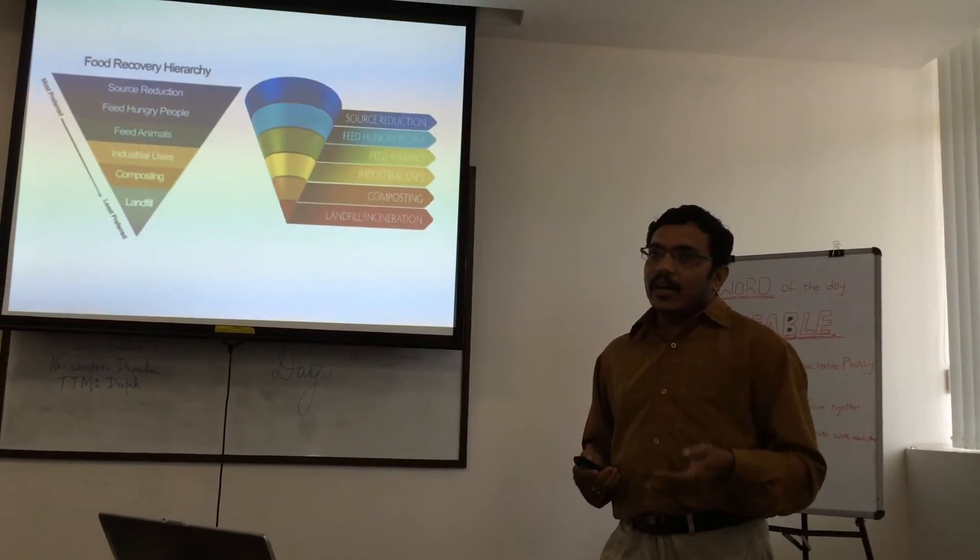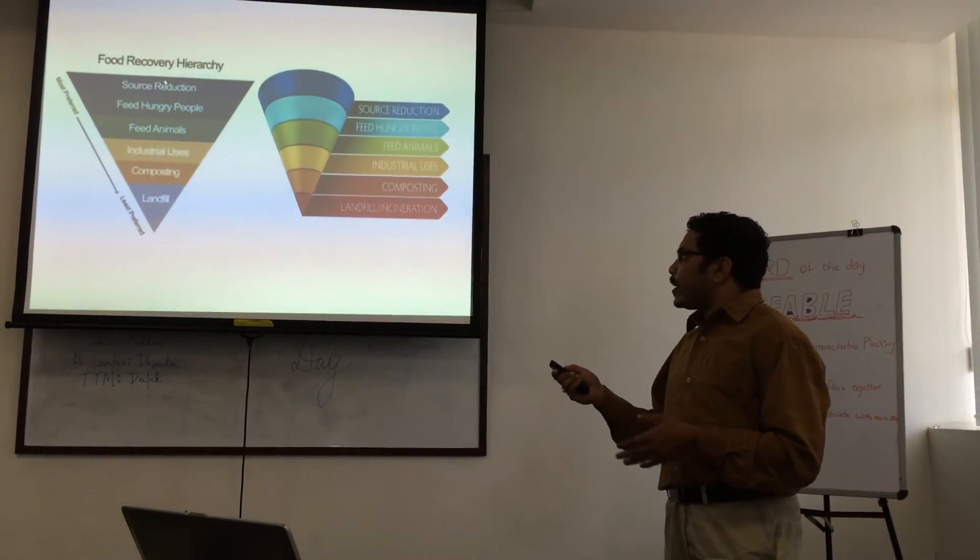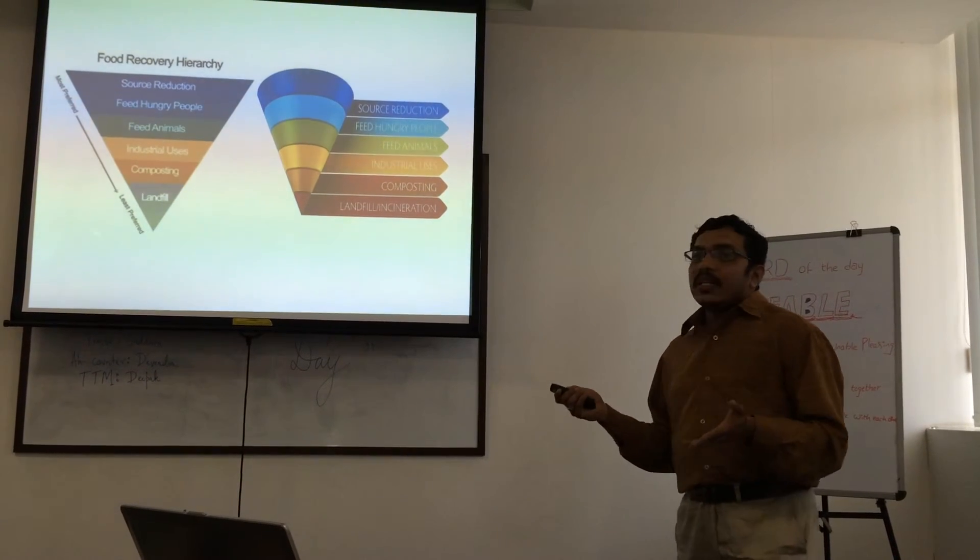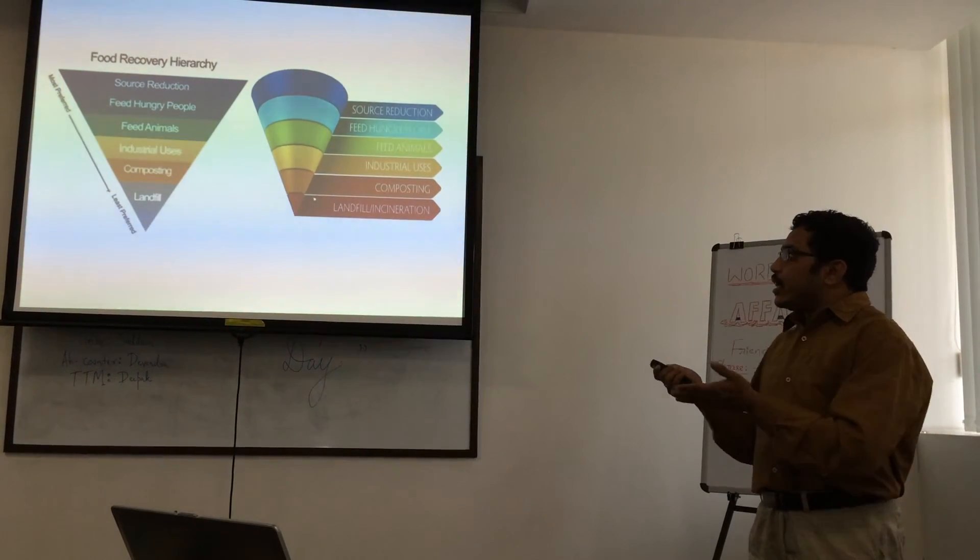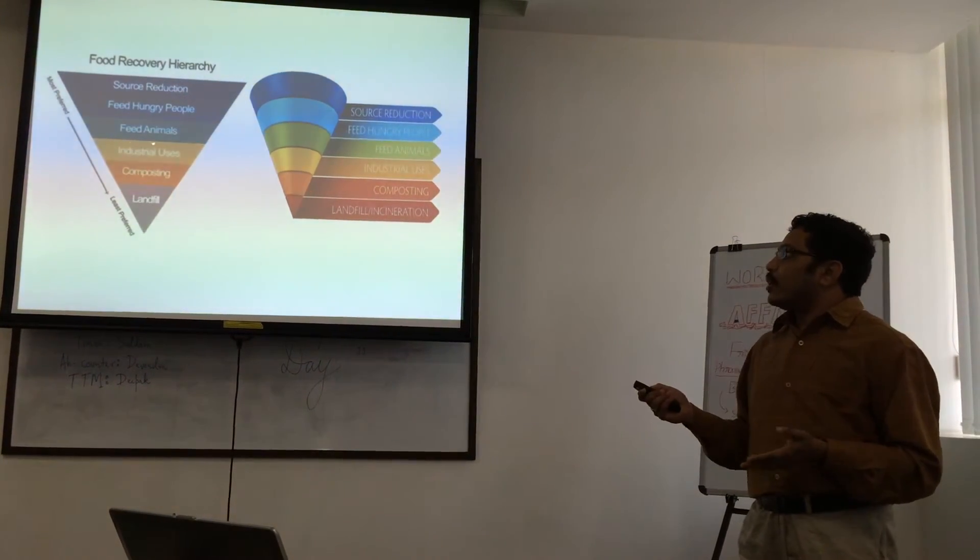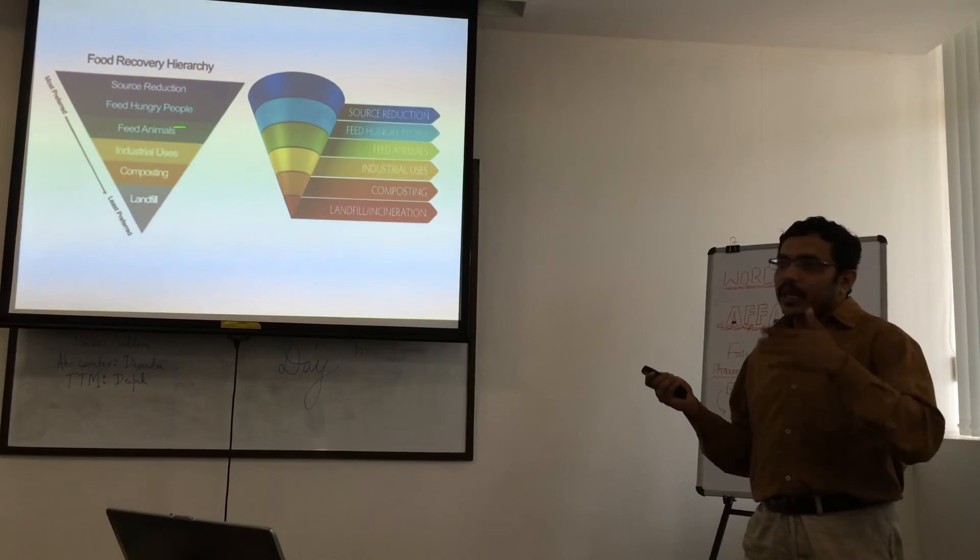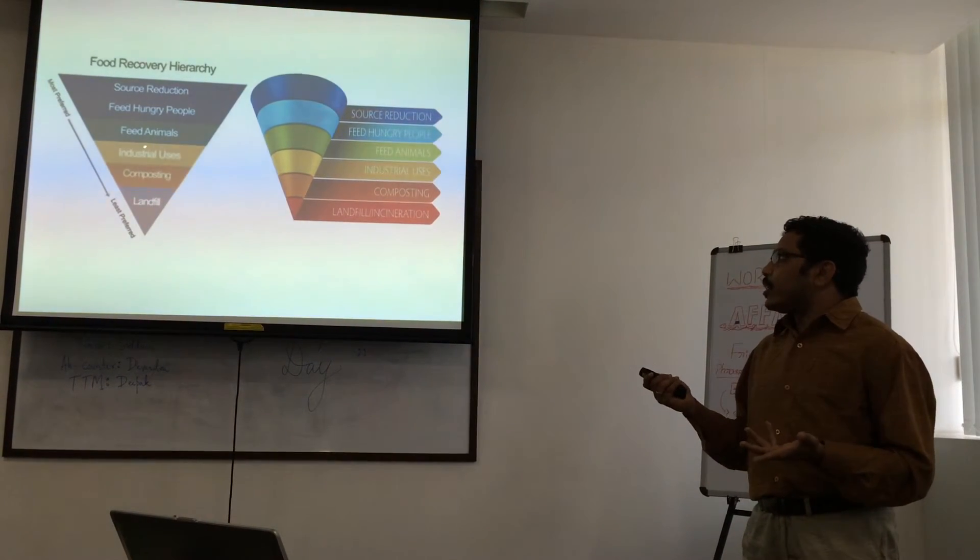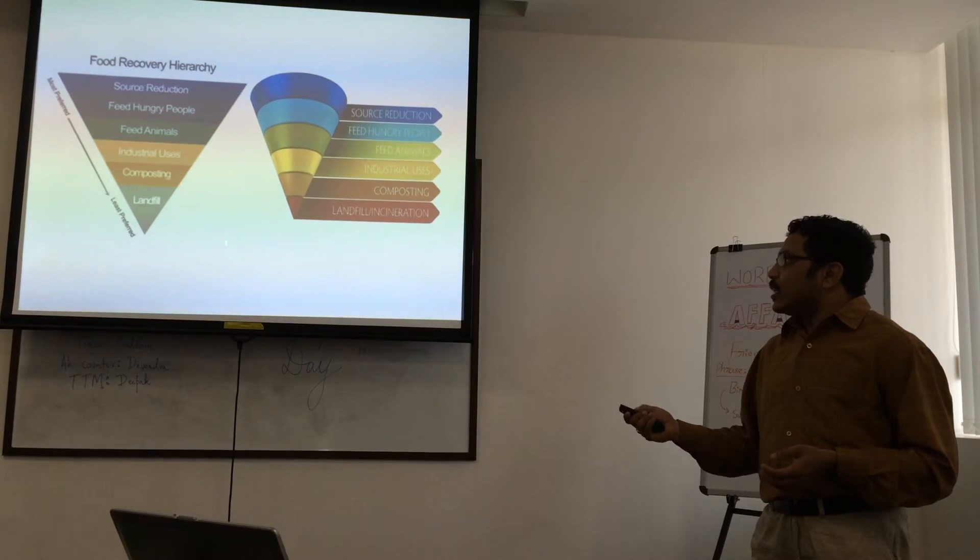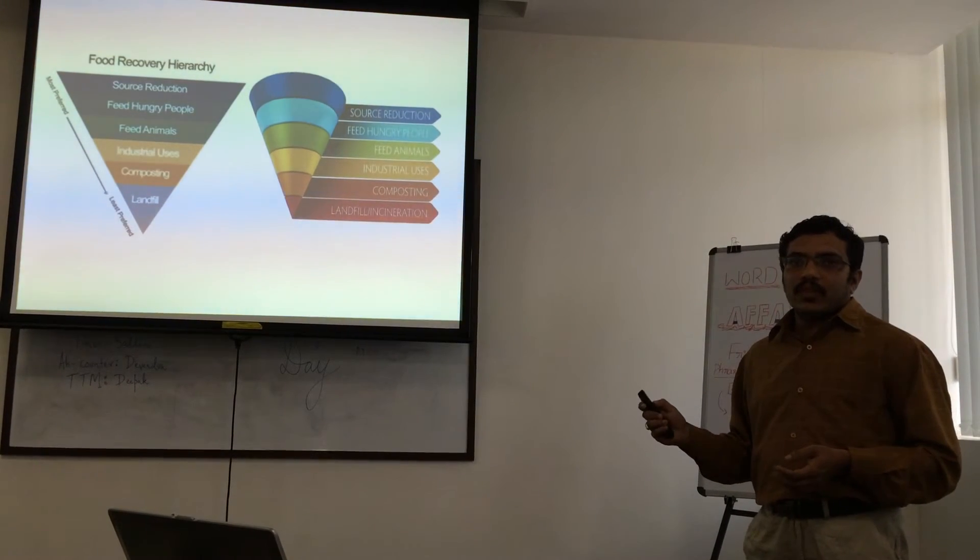Coming to the same food topic, you can use a diagram like this and say what is the best way to give a solution to food wastage. For example, you reduce at source reduction and go on and down. What is the least priority to waste food?